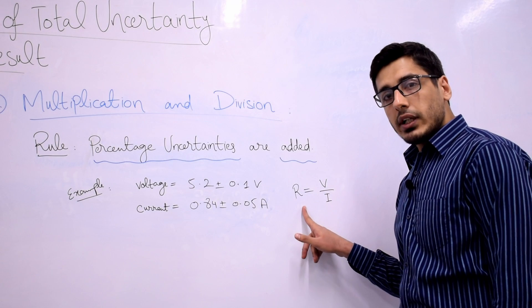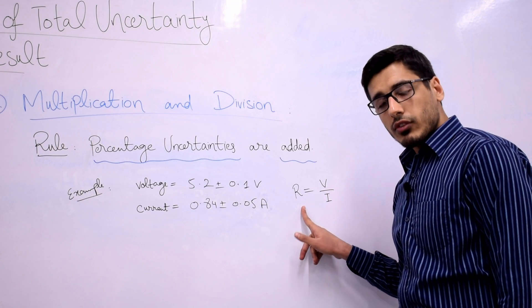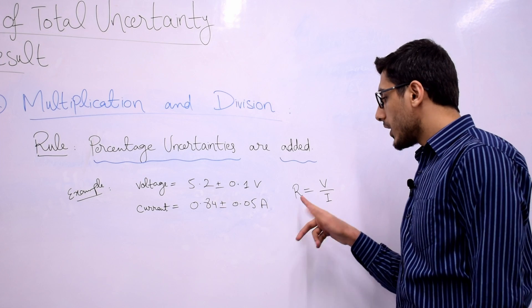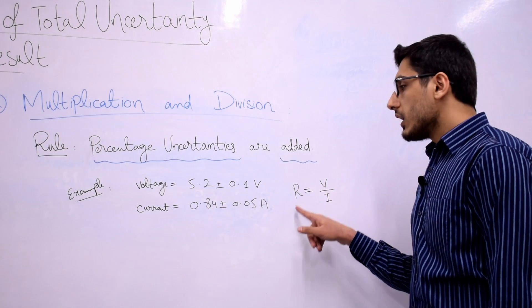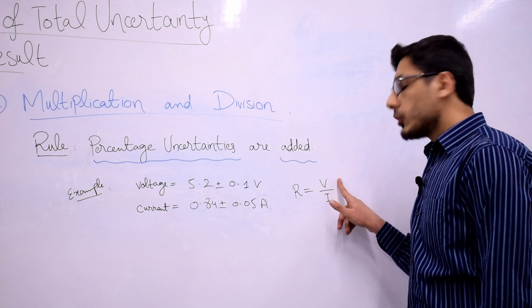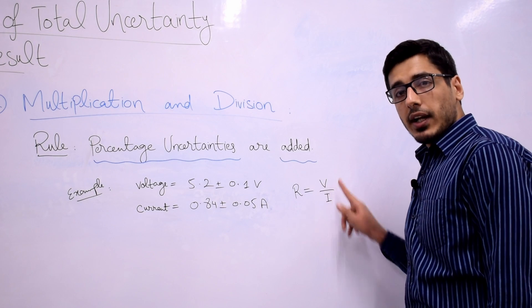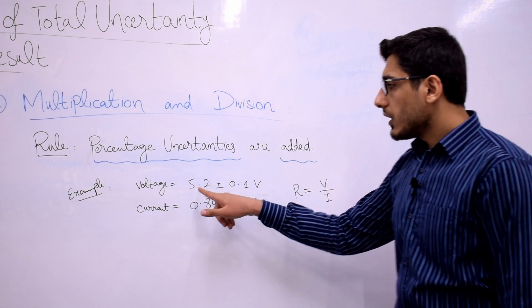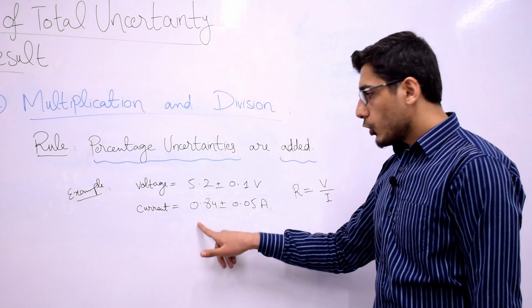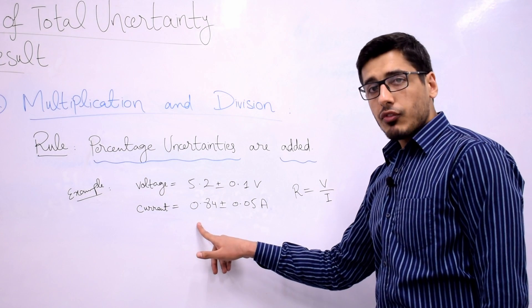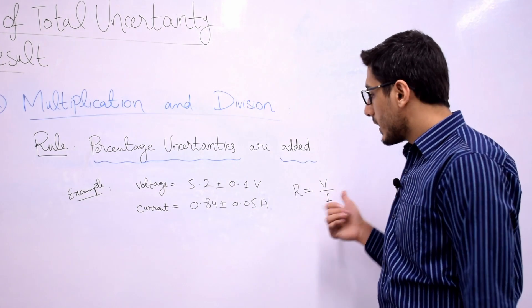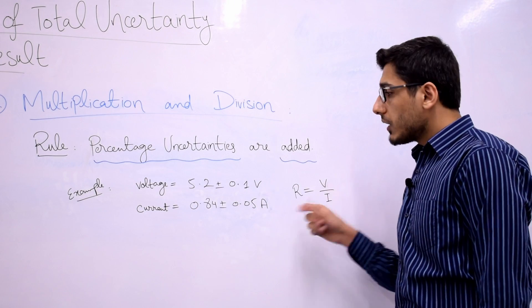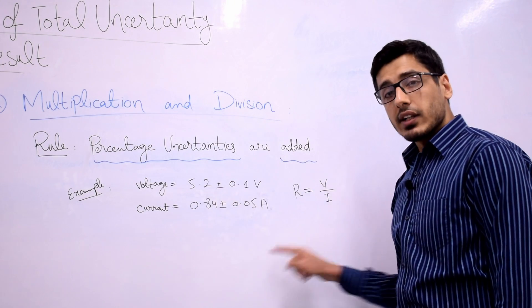Now you want to calculate the resistance of this electrical component, and you know that by Ohm's law the resistance is equal to voltage divided by current. So you can simply divide 5.2 by 0.84 to get the measurement of resistance. But what about the uncertainties?